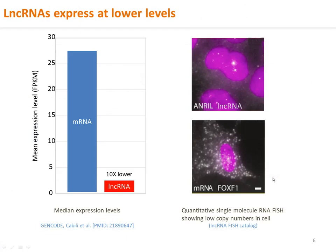One important general property of lncRNAs is that they are expressed at low levels. In the gene catalogs of the entire transcriptome, the median lncRNA level is about one-tenth of mRNAs. In quantitative in-situ hybridization FISH, where one dot is one copy of RNA, lncRNA NREL is present at just a couple of copies, compared to FOXF1 mRNA which is present in high copy numbers in both the cytoplasm and nucleus.